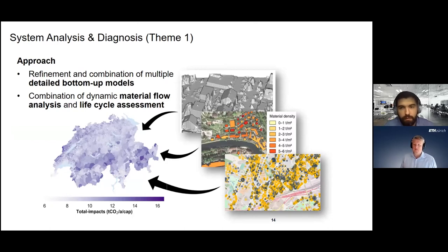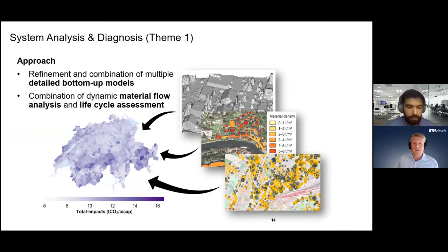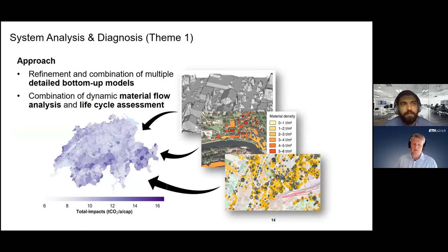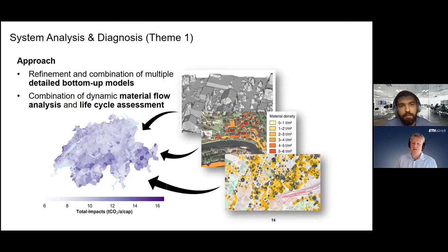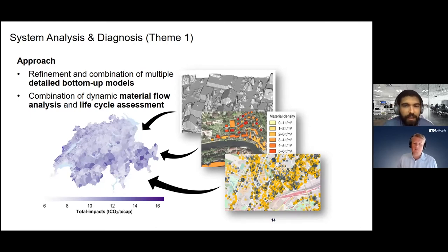For Switzerland specifically, we will build upon, combine, update and refine existing highly detailed bottom-up models on building energy, material use, and household consumption. By combining dynamic material flow analysis with life cycle assessment, we think we can produce an explicit model of supply chains — for example for the hinterlands of settlements — and assess the environmental impacts of these stocks and flows.